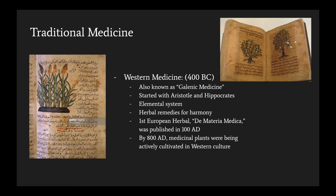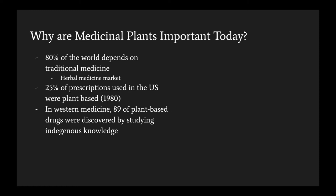Traditional Western medicine was outlined around 400 BC and is also known as Galenic medicine. This started with Aristotle and Hippocrates and is an elemental system. It is very similar to the Ayurvedic system in that health is seen as a reflection of inner harmony — but here it's the harmony between the four elements: air, fire, water, and earth. The first European herbal was published in 100 AD, and by 800 AD medicinal plants were being actively cultivated in Western culture.